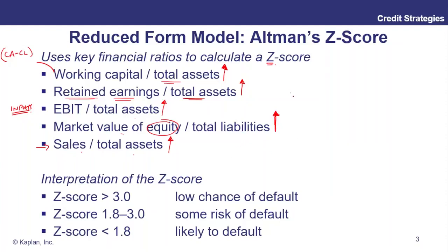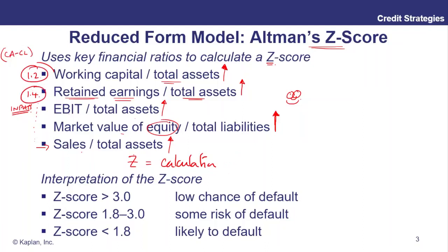Obviously the higher these factors, the better off the company is. What the Altman Z-score does is give you a formula — it's approximately 1.2 times the first factor, 1.4 times the second, and so on. You can see the coefficients in the notes, but I don't think the coefficients are important. The Z-score is a calculation based on these inputs, and you get these coefficients through regression — that's how Altman got them. It's a calculation of a score based on these fundamental metrics.